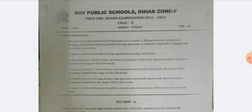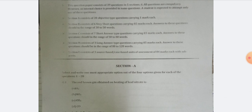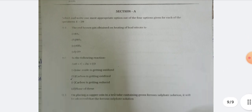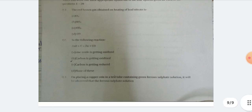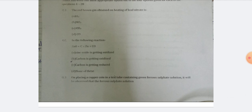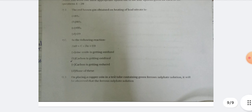Let's move forward to Section A — the objective-type questions of 20 marks, each question carrying one mark. I hope you are able to see the questions clearly, because any visibility issue is a fault of the printing, not mine.